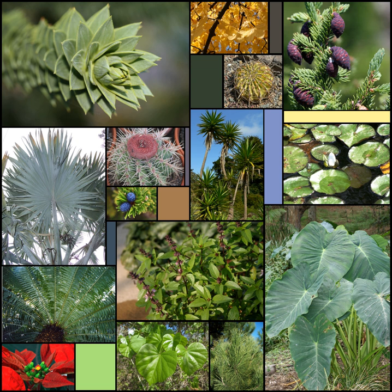Some leaves, such as bulb scales, are not above ground. In many aquatic species the leaves are submerged in water. Succulent plants often have thick juicy leaves, but some leaves are without major photosynthetic function and may be dead at maturity, as in some cataphylls and spines. Furthermore, several kinds of leaf-like structures found in vascular plants are not totally homologous with them. Examples include flattened plant stems called phylloclades and cladodes, and flattened leaf stems called phyllodes which differ from leaves both in their structure and origin.